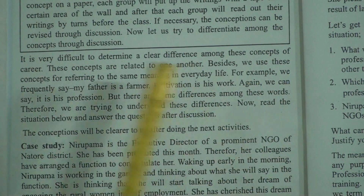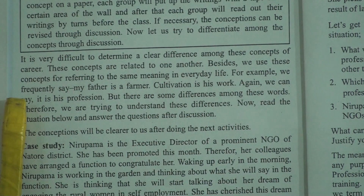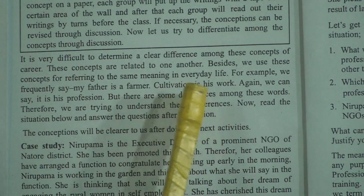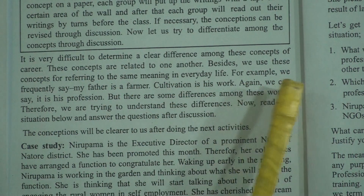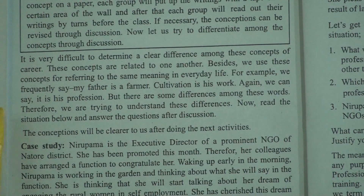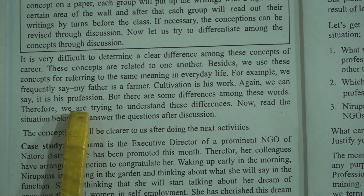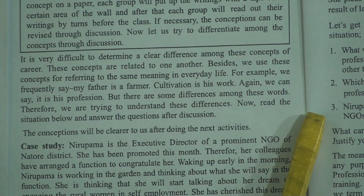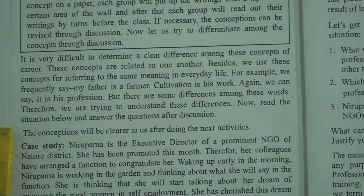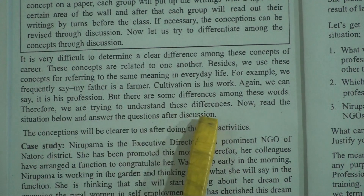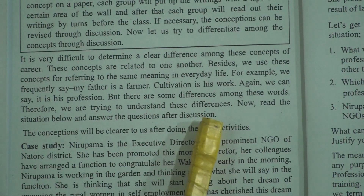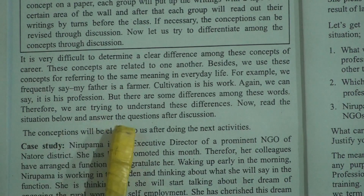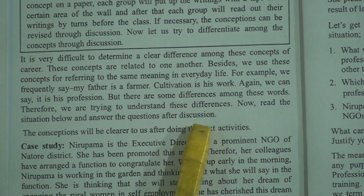For example, we frequently say my father is a farmer. Cultivation is his work. Again we can say it is his profession. But there are some differences among these words. Therefore we are trying to understand these differences.